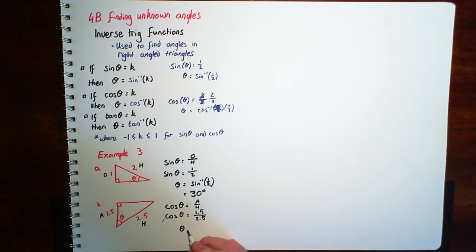And we're looking for the angle. So we say theta is cos, inverse of cos, 1.5 over 2.5. And again we put that in our calculators and we'll find that it's about 53.13 degrees to 2 decimal places.